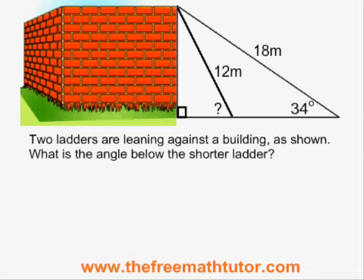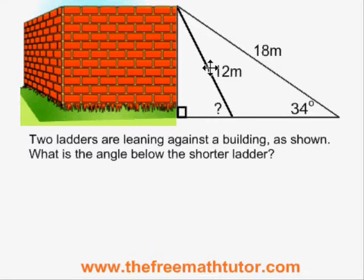This problem is what I call a multiple step SOHCAHTOA. We are being asked for the measure of this angle here, underneath the shorter of two ladders that are leaning against the same building. We can't do this problem all in one step because we know the hypotenuse, which is the length of the shorter ladder, but that's all we know besides the 90 degree angle in that smaller right triangle.